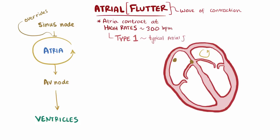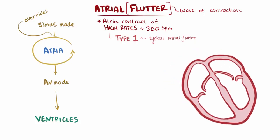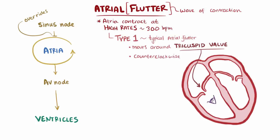Type 1, or typical atrial flutter, is more common and is caused by a single re-entrant circuit that moves around the annulus or the ring of the tricuspid valve of the right atrium, usually in a counterclockwise direction when viewed looking up through the tricuspid valve.